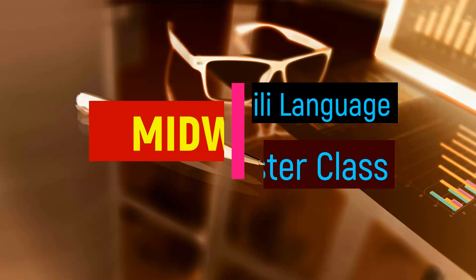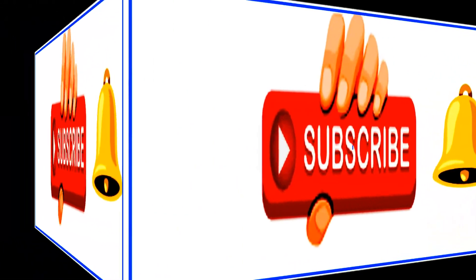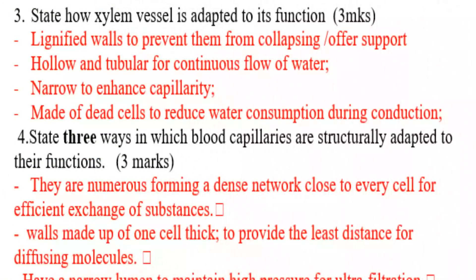State the ways in which capillaries are structurally adapted to their function. Number one: they are numerous, forming a dense network close to every cell for efficient exchange of substances. Number two: walls are made up of one cell thick layer to provide the least distance for diffusion of molecules.